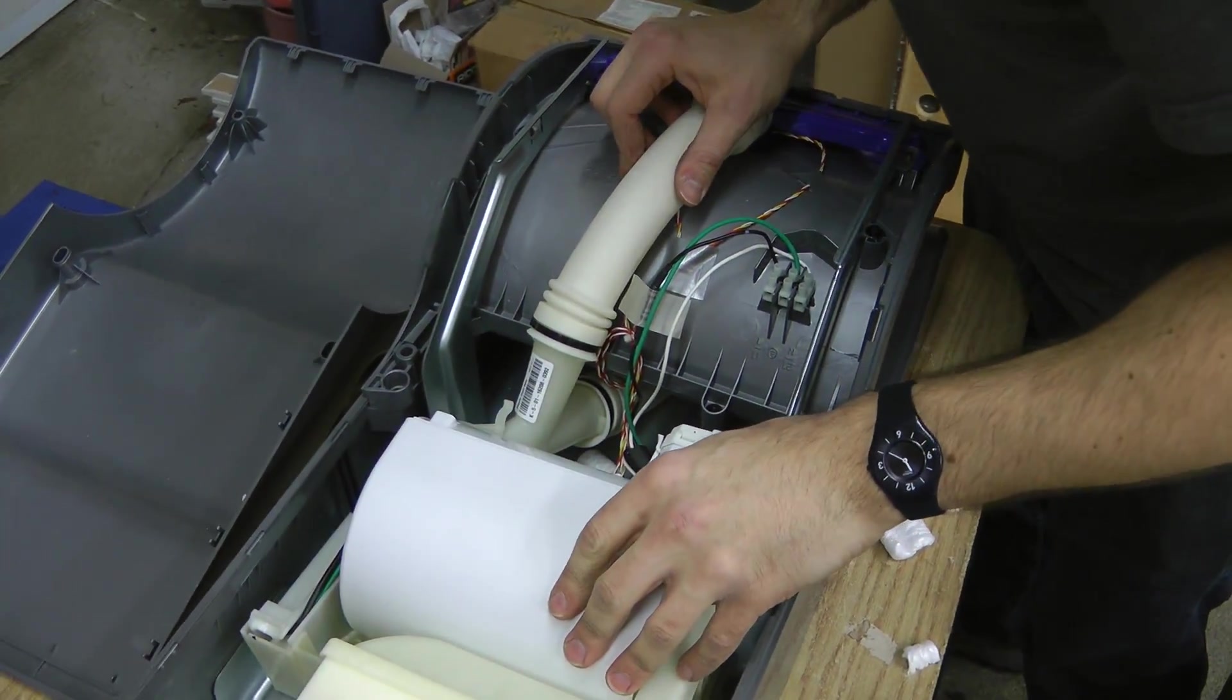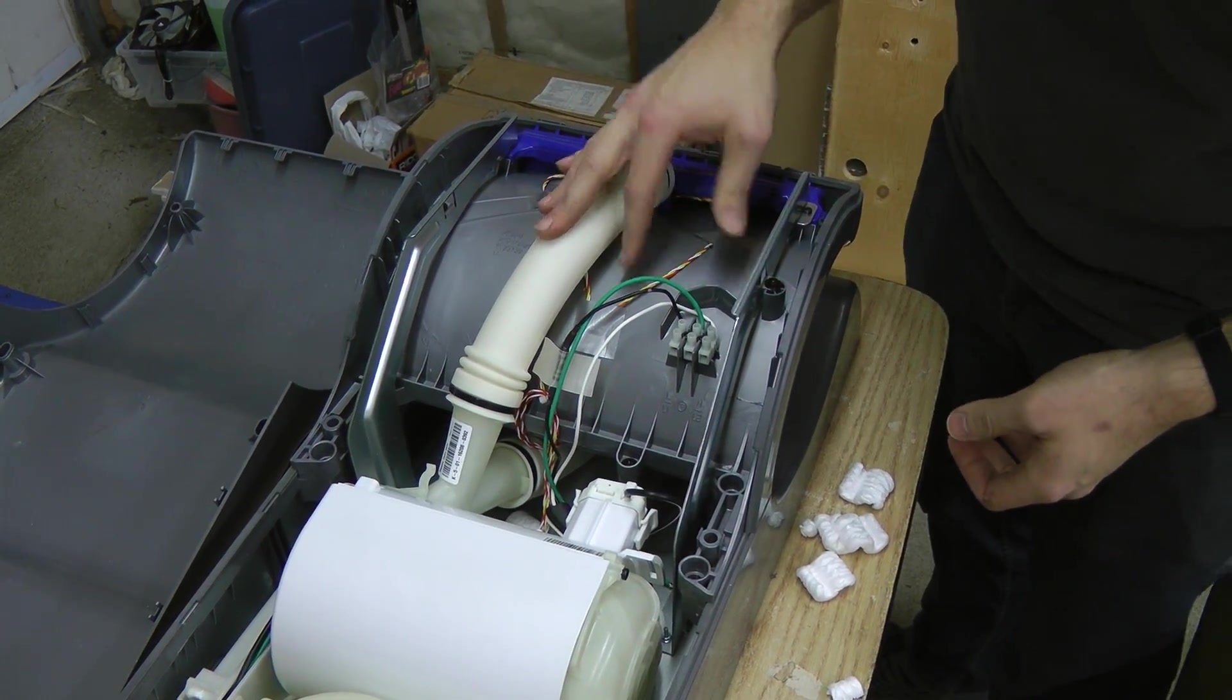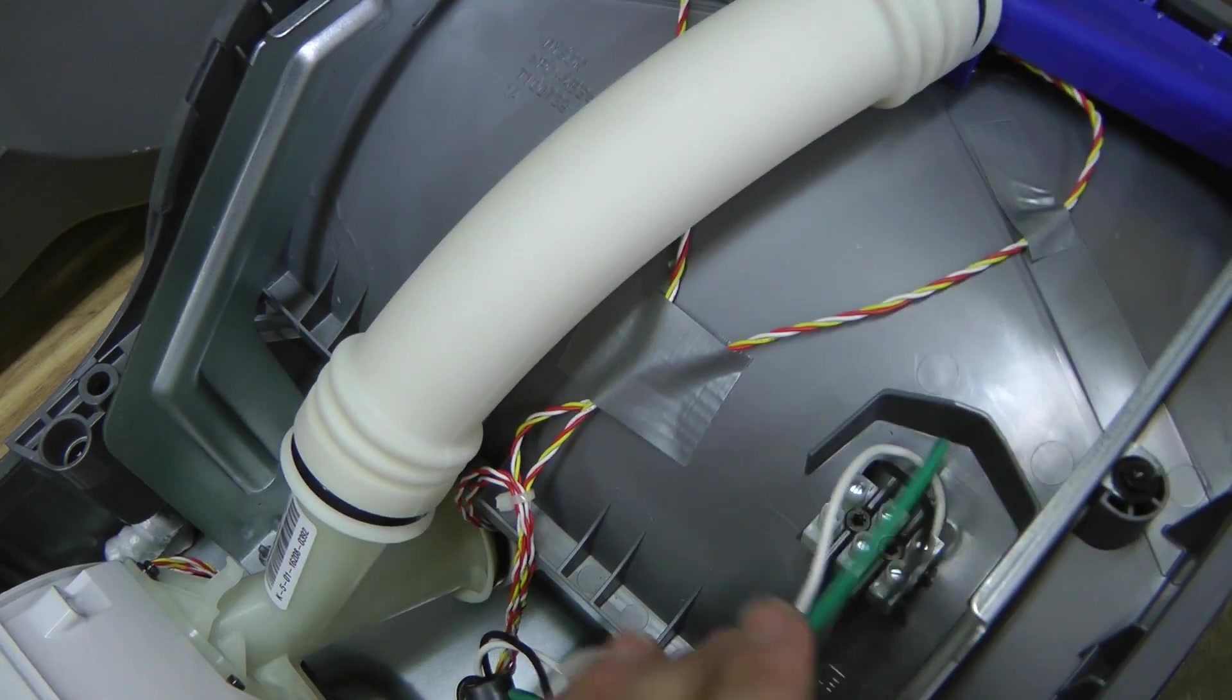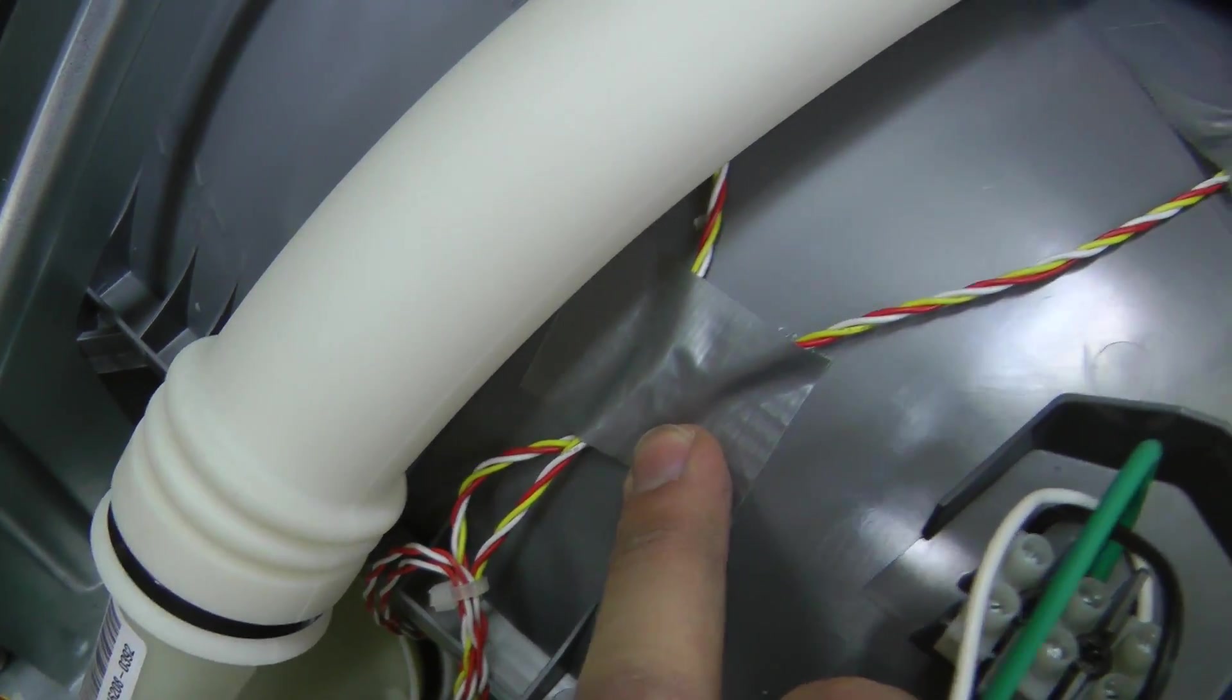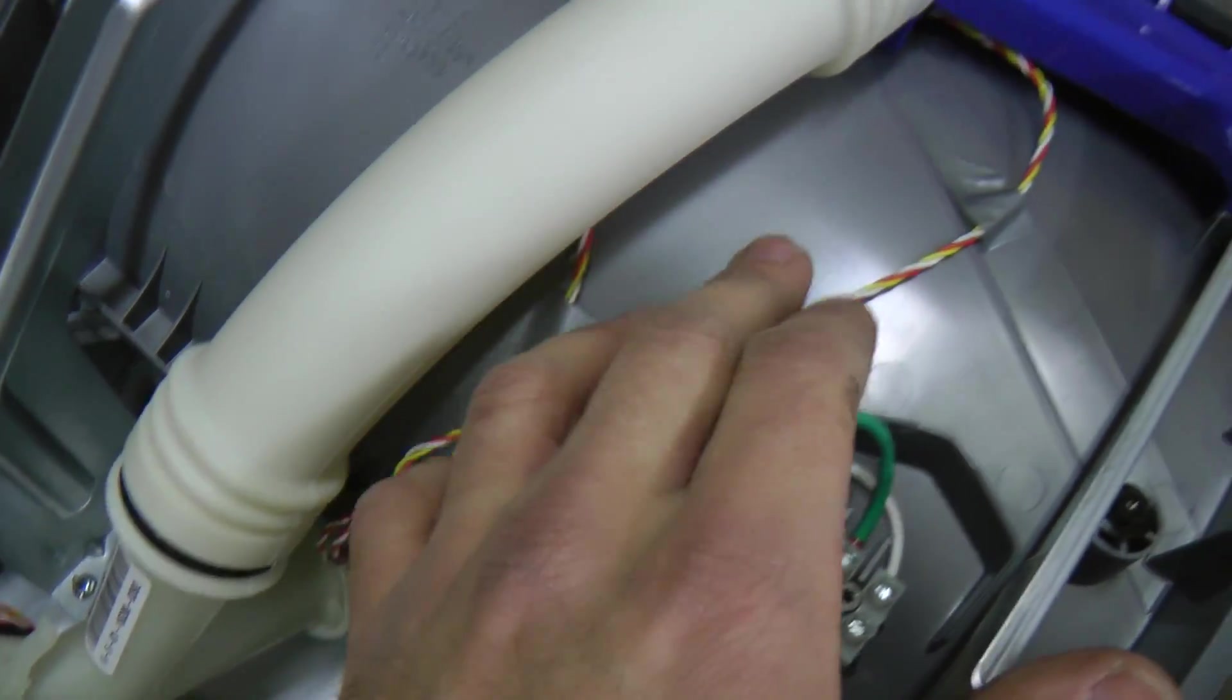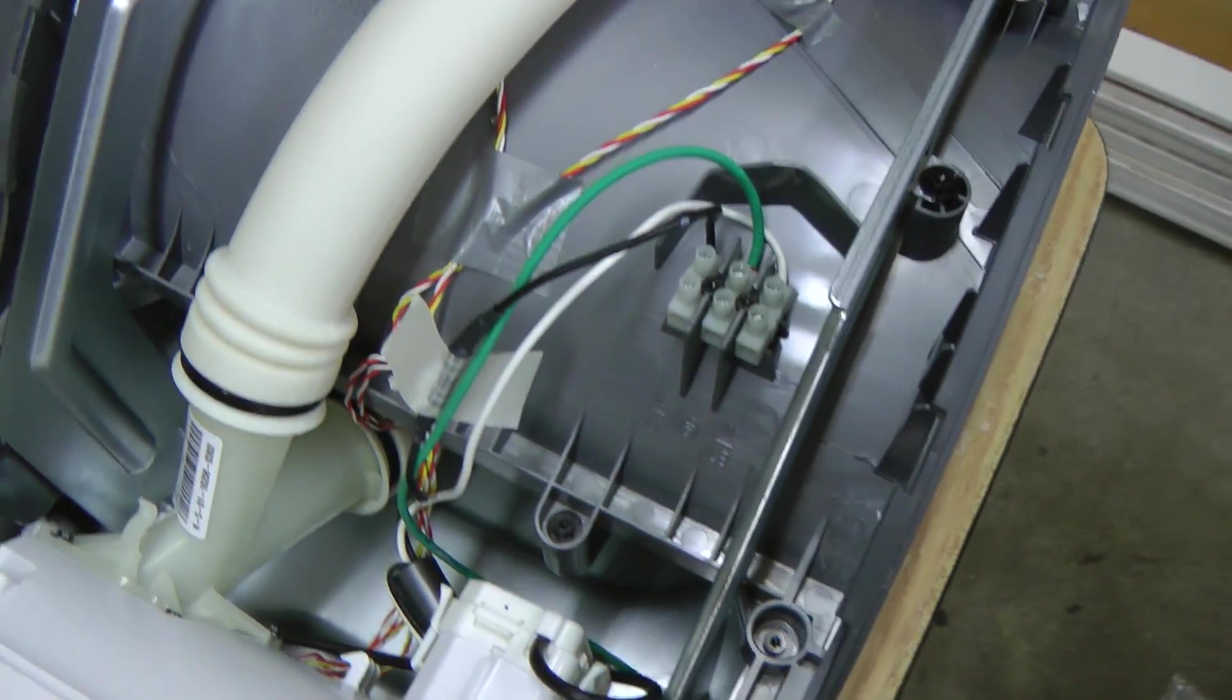So let's just start by checking all the connections and then we'll connect power and see what it does. It looks like the previous user had attempted repair because I'm pretty sure duct tape is not a factory thing from Dyson. So someone's been playing around with the sensors that detect your hands are present. But anyway, let's connect power and see what this does.